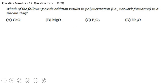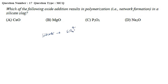Which of the following oxide additions results in polymerization, that is, network formation in a silicate slag? It is basically asking about the network formation oxide. We know that a silicate slag consists of SiO4⁴⁻. Silicate slag forms a tetrahedron network.